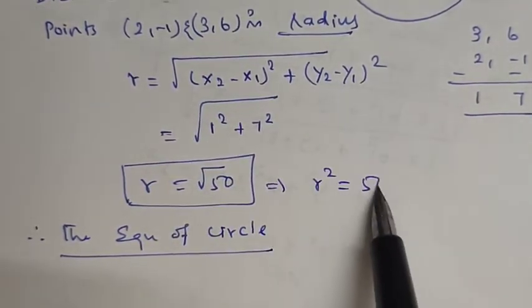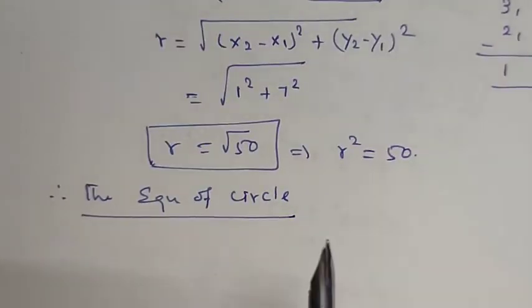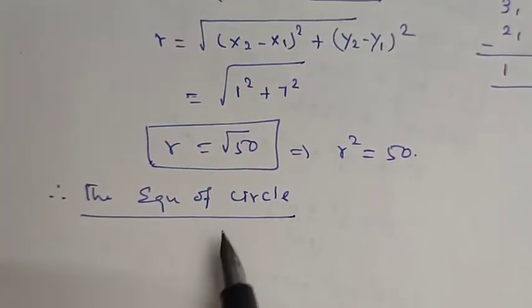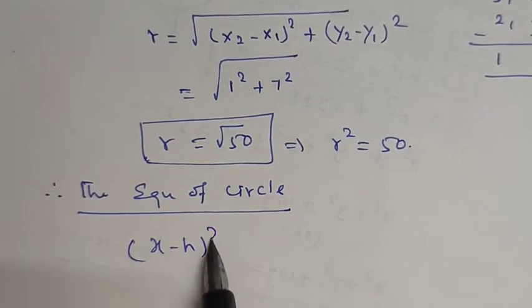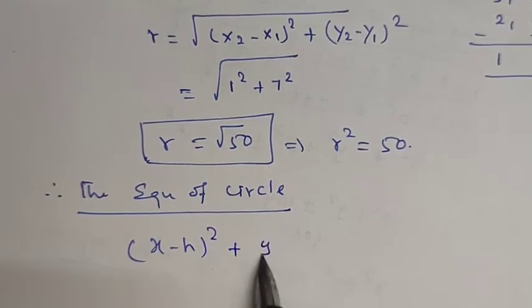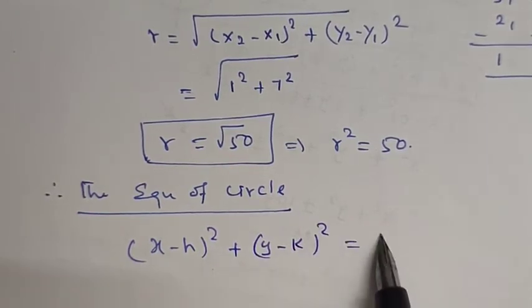Now, the equation of the circle is given by the formula: x minus h, the whole square, plus y minus k, the whole square, is equal to r square.